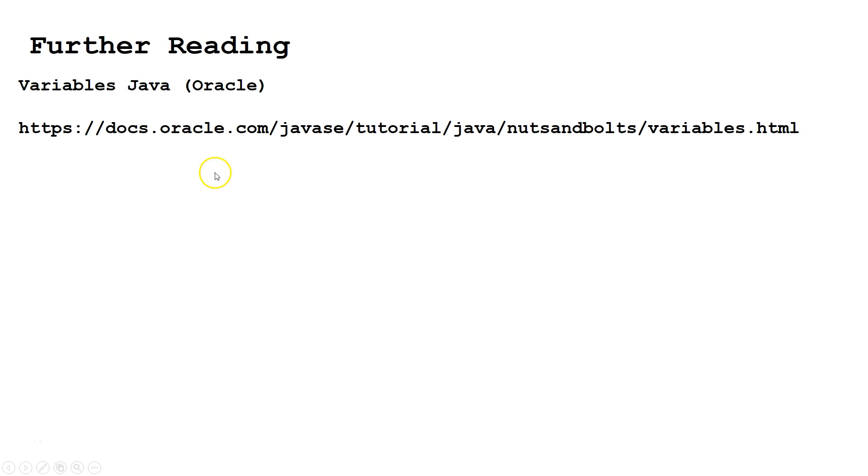For further reading, check out this website here, or type variables Java Oracle into Google and choose the first result. In our next lesson, we are going to learn how to check different Java variables for equality using the concepts of Java memory handling that we learned here. We'll see you next time.